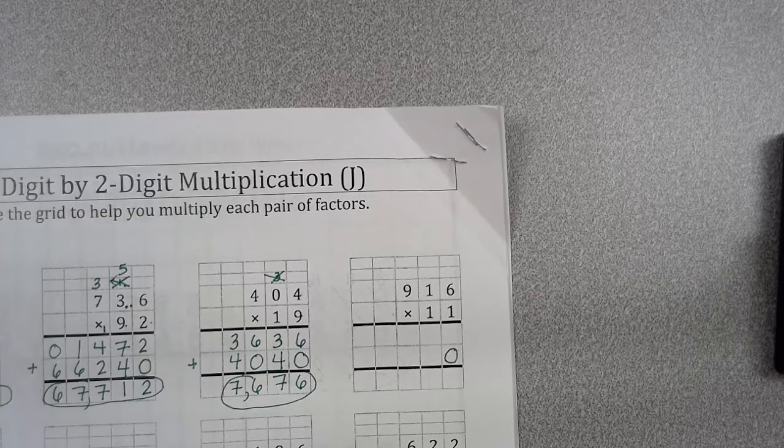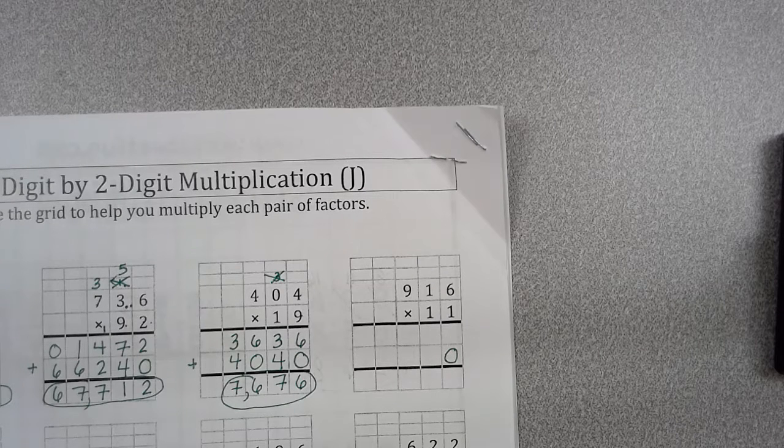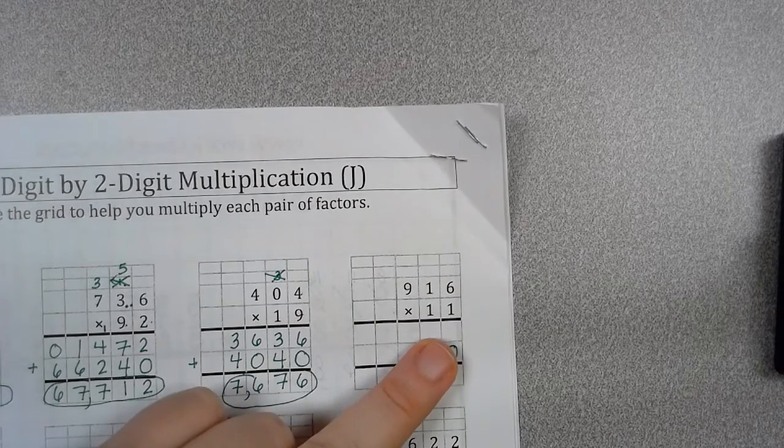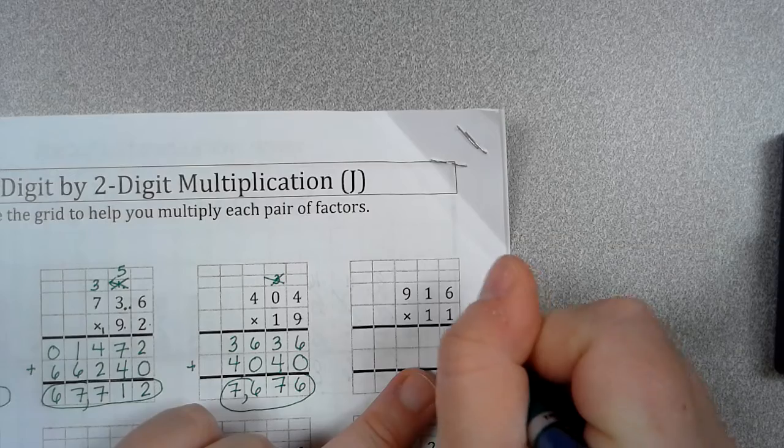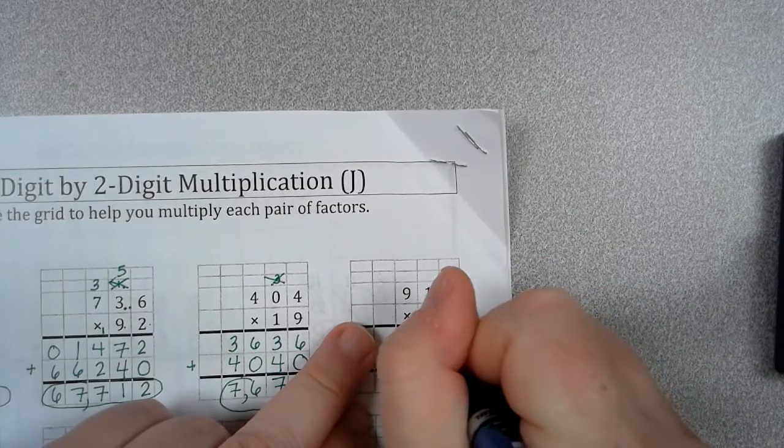All right. 916 times 11. This is going to be fairly simple. Remember, any number times 1 is itself. So, 1 times 6 is 6. 1 times 1 is 1. 1 times 9 is 9.